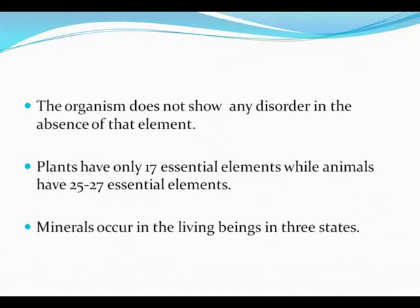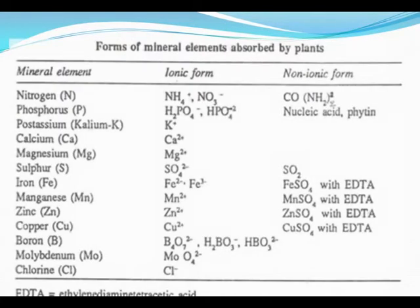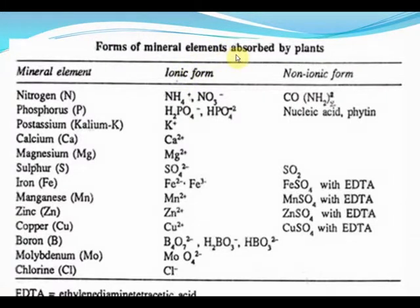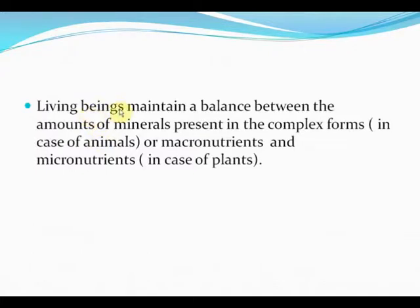Minerals occur in living beings in three states. Minerals absorbed by plants include nitrogen, phosphorus, potassium, calcium, magnesium, sulfur, iron, manganese, zinc, copper, boron, molybdenum, and chlorine. Living beings maintain a balance between the amounts of minerals present in complex forms.